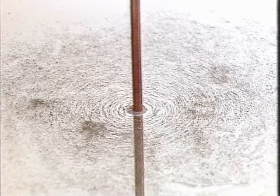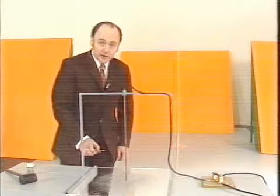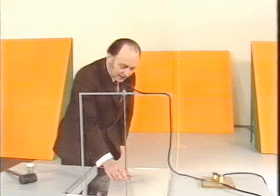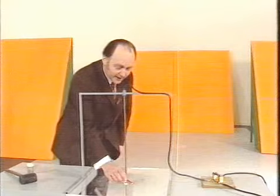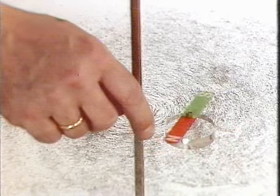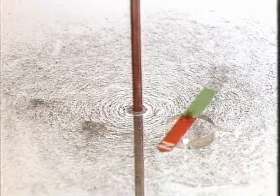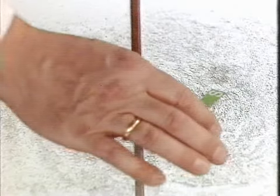Das Magnetfeld, das durch dieses Eisenpulver angedeutet wird, umschlingt ringförmig den stromführenden Draht. Um nun die Orientierung des Magnetfeldes zu bekommen, bringe ich eine Magnetnadel hier in den Feldbereich. Der Nordpol der Magnetnadel zeigt ja immer in die Richtung des magnetischen Feldes.